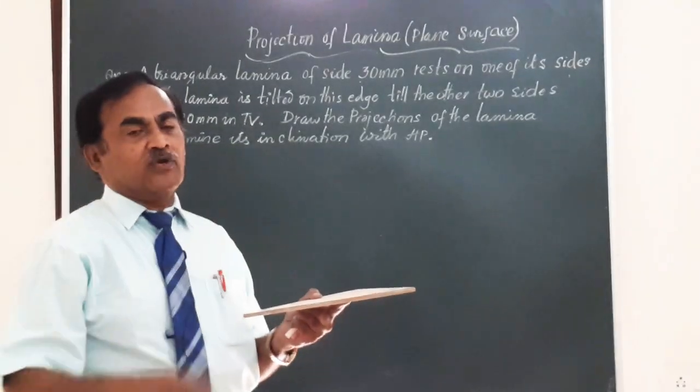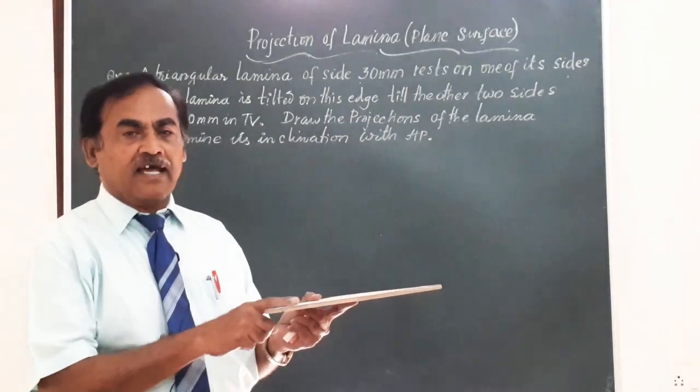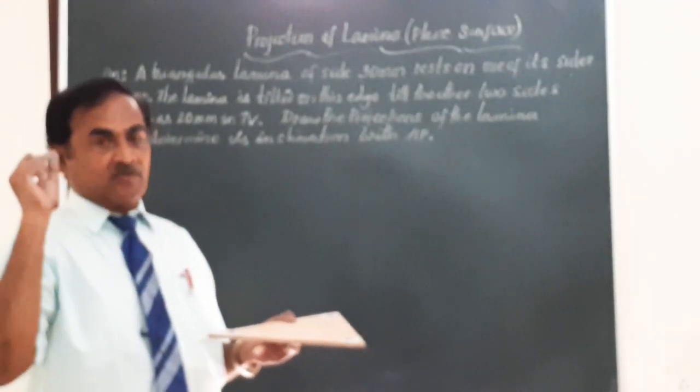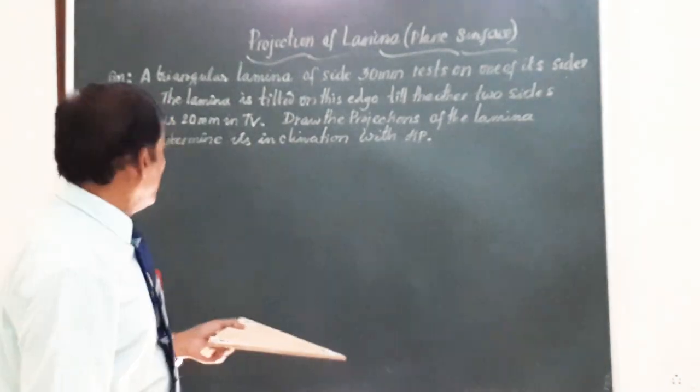You can get the front and top views. The front view is going to be a triangle, an equilateral triangle of side 30 mm. And the top view is going to be a line on XY of length M.